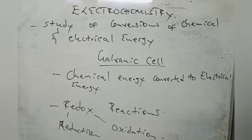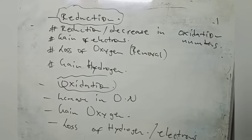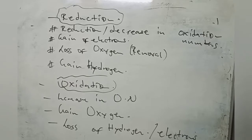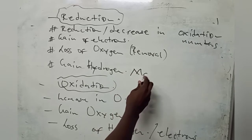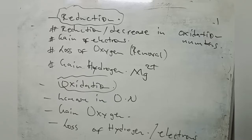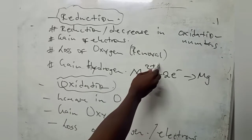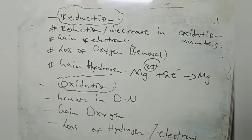Reduction deals with a decrease in oxidation numbers. It can also be defined as a gain of electrons, loss of oxygen, and gain of hydrogen. For example, magnesium ions gaining electrons — so the magnesium ion gains electrons and the oxidation number moves from plus two to zero. That is an example of reduction — a gain of electrons.